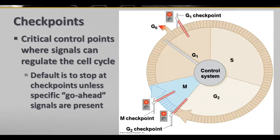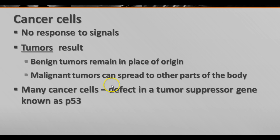Other things scientists have learned have to do with what stops these checkpoints from behaving properly — and that's when you have something like cancer cells. Cancer cells don't respond to the signals. As a result of those stop signals not working, you get something like a tumor. A tumor is an overgrowth of cells.